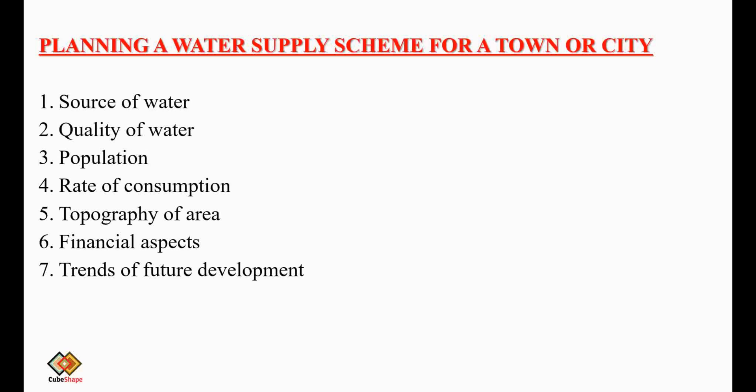In planning a water supply scheme, the following seven points have to be considered: the source of water, the quality of the water, the population, the rate of consumption, the topography of the area, financial aspects, and trends of future development. Regarding the source of water, we should look for a perennial source in the vicinity of the town.